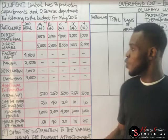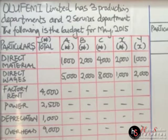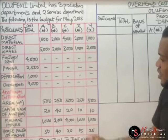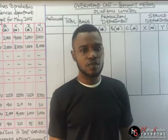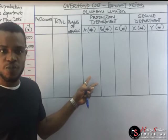We'll have a question on the board. Olufemi Limited has three production departments: A, B, and C, and two service departments: X and Y. The following is the budget for May 2015. To present the solution, you can see I have a table on the board and you must know how to draw this table. You must present your solution this way.